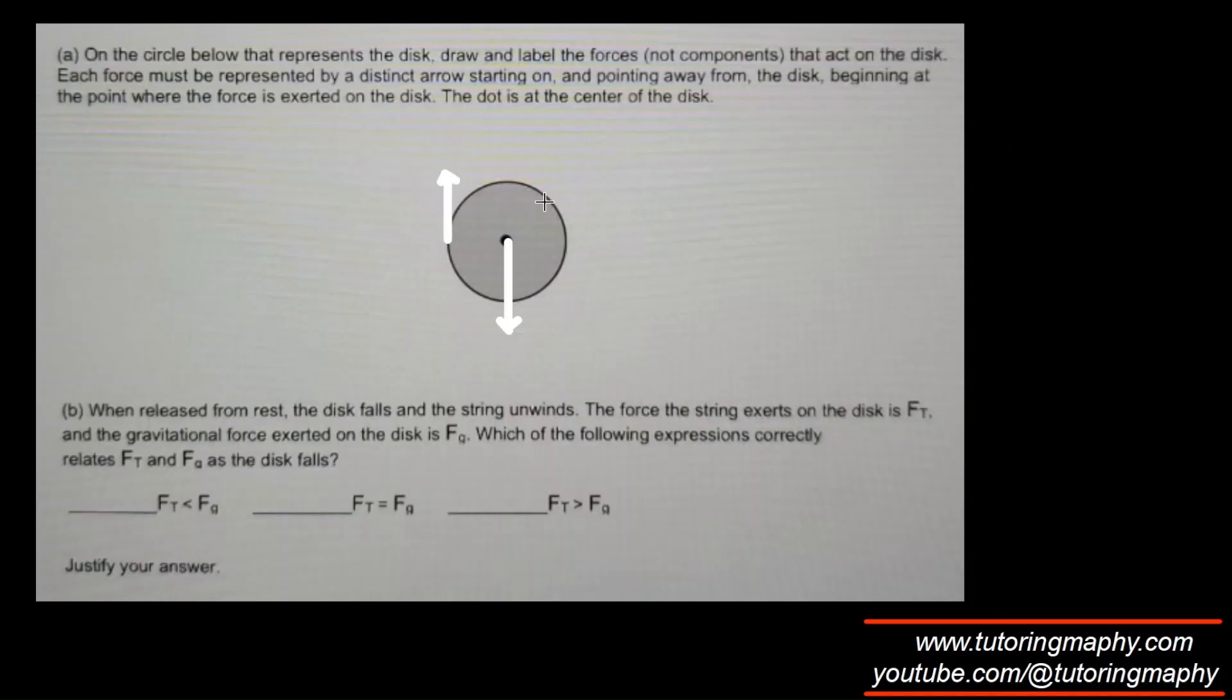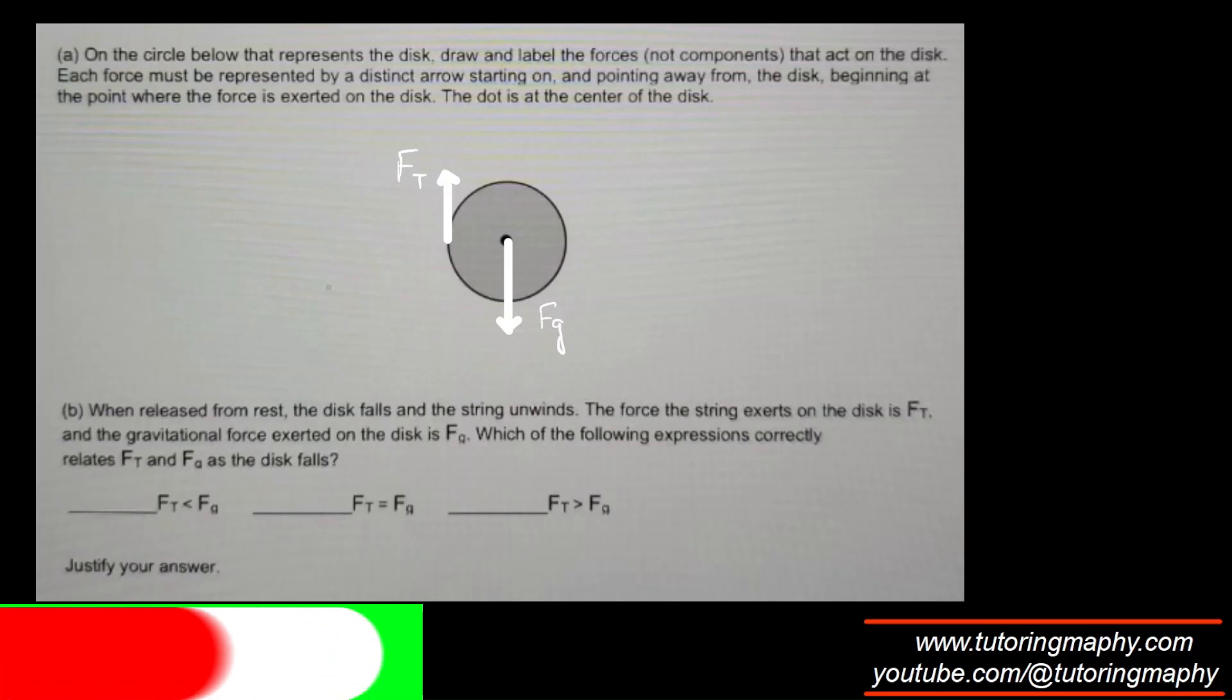And I think it makes sense because if you read further, when released from rest the disk falls and the string unwinds. So obviously if it falls, then the downward arrow must be longer than the upward arrow. So this is FG and it looks a little longer as well. And this is FT.